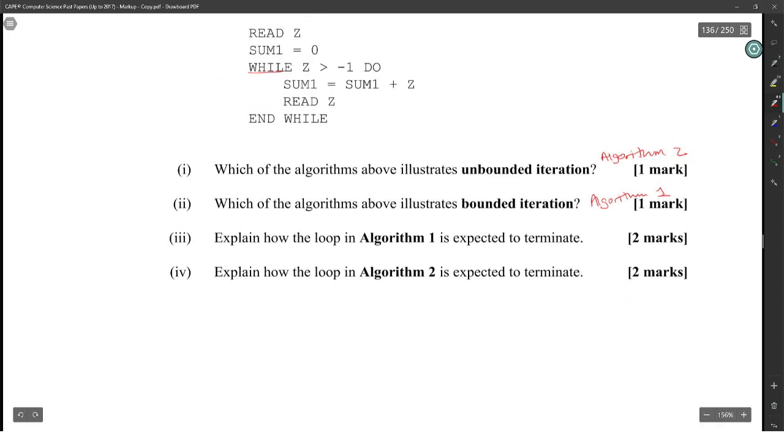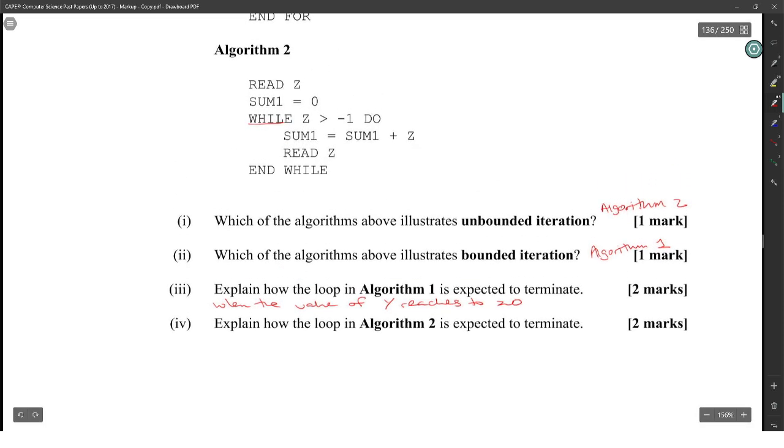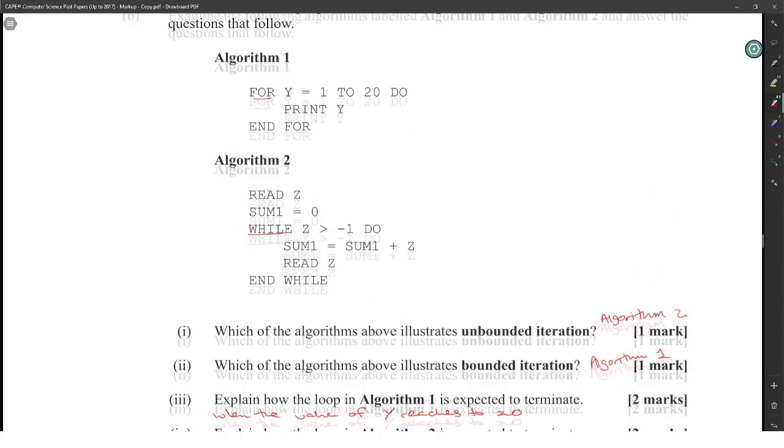Explain how the loop in Algorithm 1 is expected to terminate when the value of Y reaches 20. Explain how the loop in Algorithm 2 is expected to terminate. When the user inputs a value that is less than or equal to negative 1. Not a value of negative 1. A value that is less than or equal to negative 1 for Z. Because it's greater than negative 1, so if you hit negative 1, you will stop. That was an easy question.